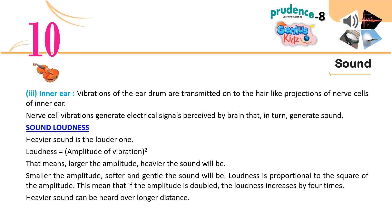Sound loudness: the heavier the sound, the louder it is. Loudness is equal to the square of the amplitude of vibration. The larger the amplitude, the heavier the sound will be; the smaller the amplitude, the softer and gentler the sound will be. Loudness is proportional to the square of the amplitude — if the amplitude is doubled, loudness increases by 4 times. Heavier sound can be heard over longer distances.